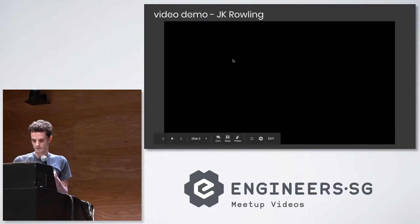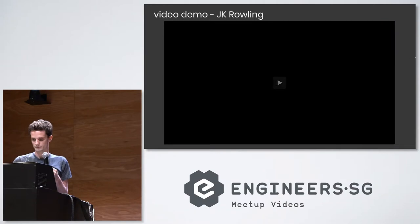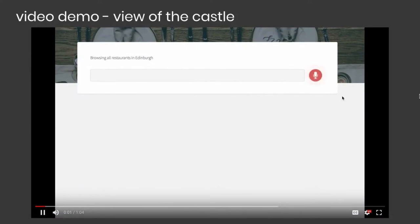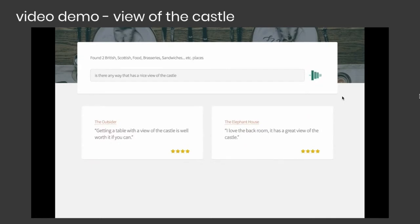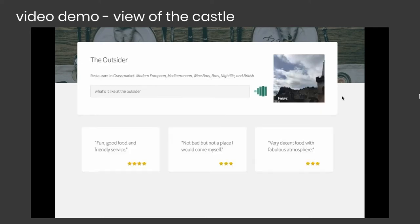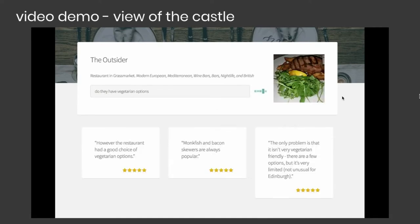Actually, it's a recorded demo. This first one is me trying to find a restaurant in Edinburgh with a view of the castle. 'Is there anywhere that has a nice view of the castle?' 'I've heard a review of The Outsider saying getting a table with a view of the castle is well worth it if you can.' 'What's it like for The Outsider?' 'One review said: fun, good food and friendly service.' 'Do they have vegetarian options?' 'According to one review, the restaurant had a good choice of vegetarian options.'